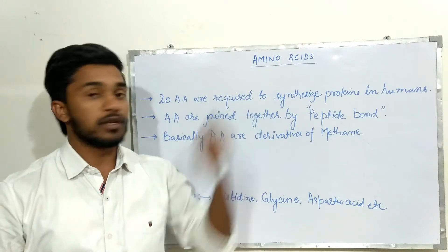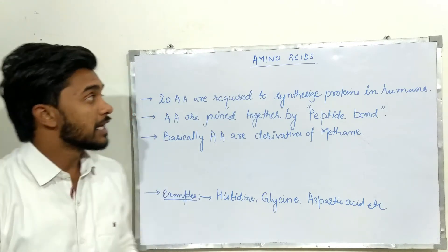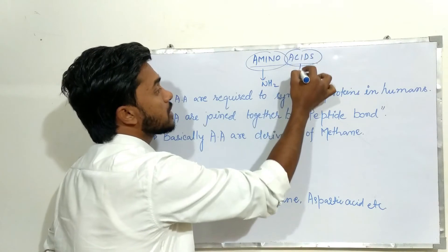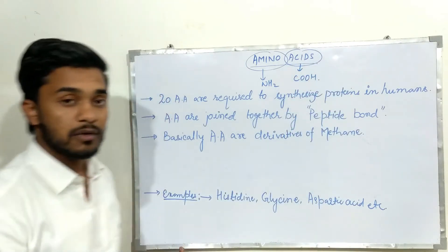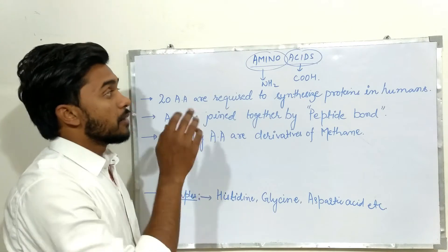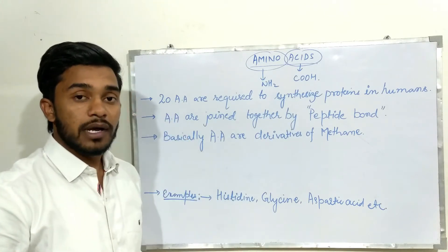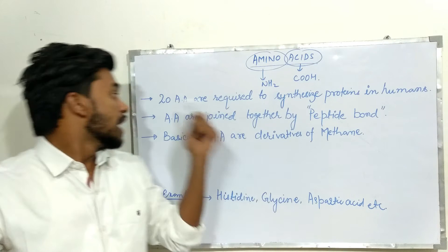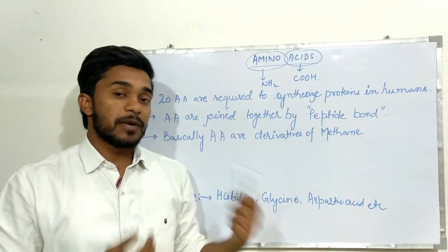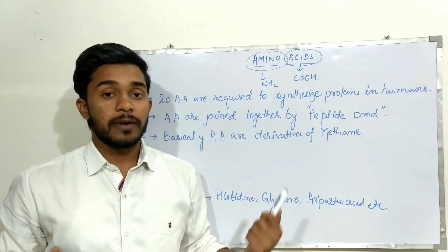Today's topic is amino acids. The first question is: what are amino acids? As the name suggests, they are composed of one amino group and one carboxylic acid group. They are basically the building blocks of proteins. Total 20 amino acids are required to synthesize protein in human beings. Amino acids are joined together by peptide bonds, which can be formed in a continuous manner to get long polypeptide chains.